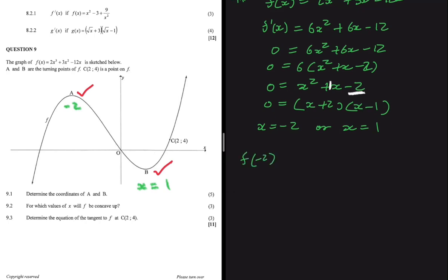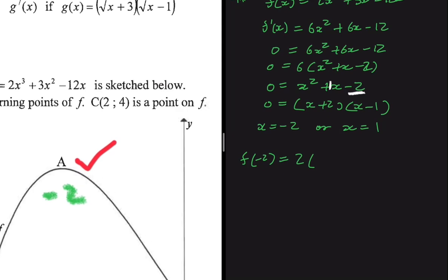Now we need the corresponding y-values. Substituting x = −2 into f(x): f(−2) = 2(−2)³ + 3(−2)² − 12(−2). Putting that into the calculator gives y = 20. So the coordinates of A are (−2, 20).